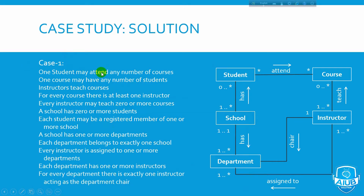Case 1. One student may attend any number of courses. The relationship is: Student attends Course. This is a many-to-many type of relationship between the two classes.